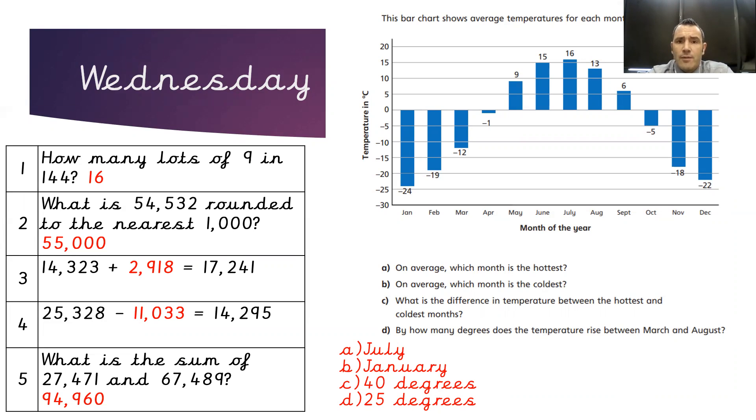So in order to get from minus 24 back to zero, that would be 24 on its own. And then add 16 to that would give us the 40 degrees. That is the answer.